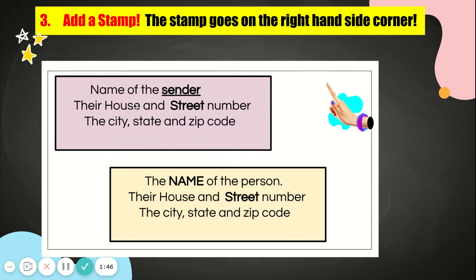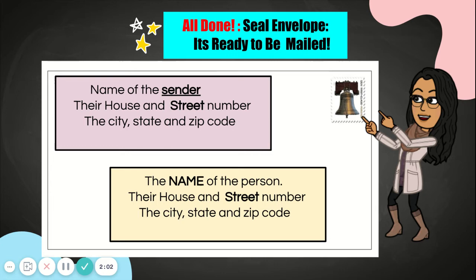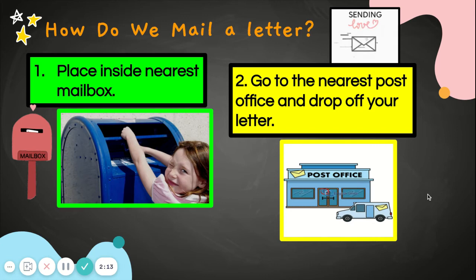So let's see — you have your address, which is the return address, on the pink box in the left hand corner friends, and the recipient address goes right in the middle. This is who you're sending the letter to, and the right hand corner is where your stamp goes. Once you have all these three parts on the front of your envelope, your envelope is ready to be mailed.